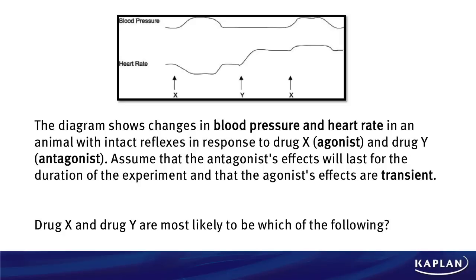So with this question, before you even read it, you're there on test day and we've got a figure. That means you're going to have to interpret the figure before you go to those answer choices. The question reads: the diagram shows changes in blood pressure and heart rate in an animal with intact reflexes in response to drug X, agonist, and drug Y, antagonist. So perhaps one of the things you're asking yourselves is, why did they tell me it's an animal with intact reflexes?